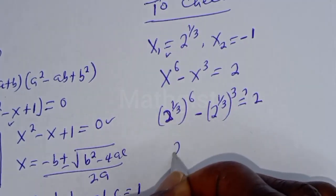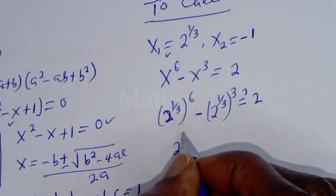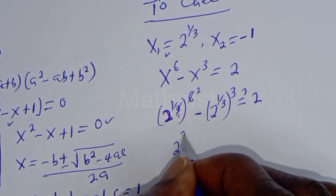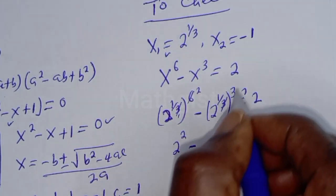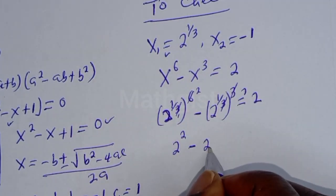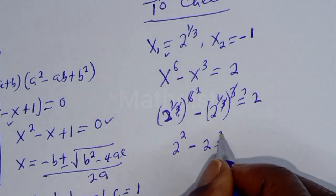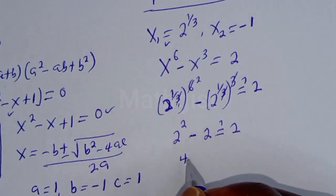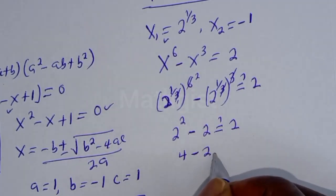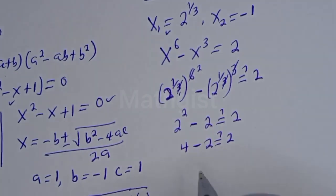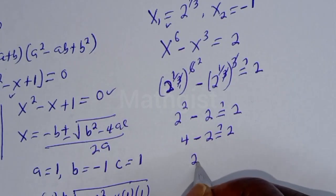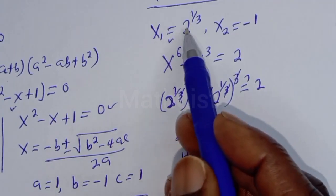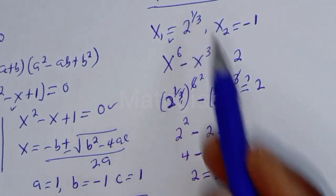This gives 2 raised to the power 6 times 1 over 3, minus 2 raised to the power 3 times 1 over 3, which is 2 squared minus 2 raised to the power 1, must equal 2. That is 4 minus 2 must equal 2. And 4 minus 2 equals 2, which is true. So s is equal to 2 raised to the power 1 over 3 is confirmed.